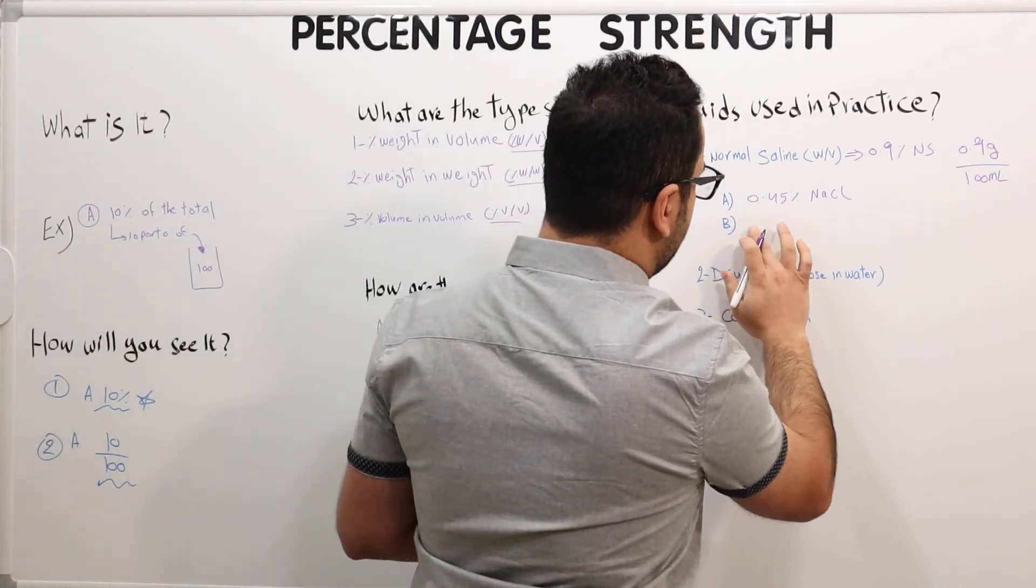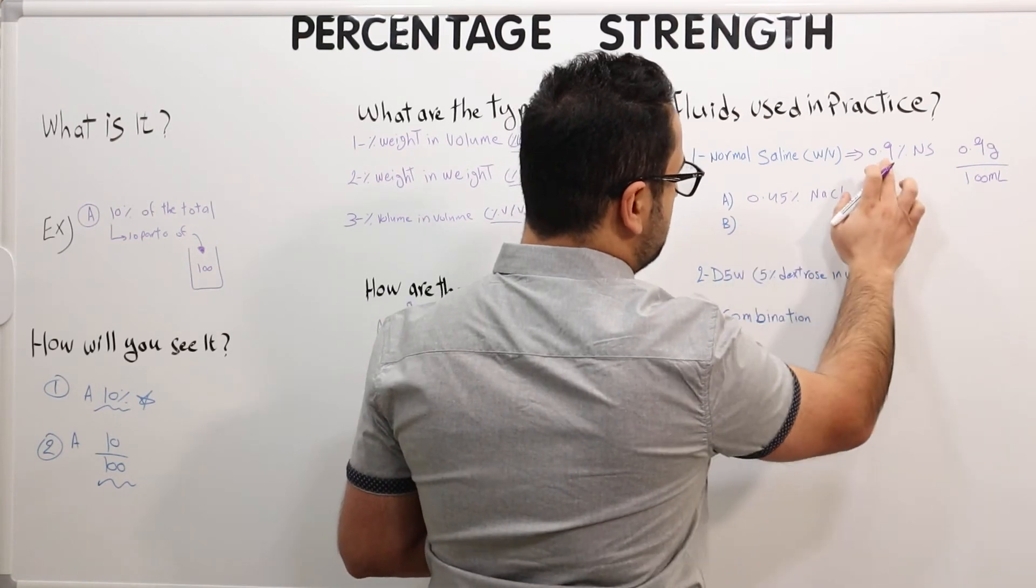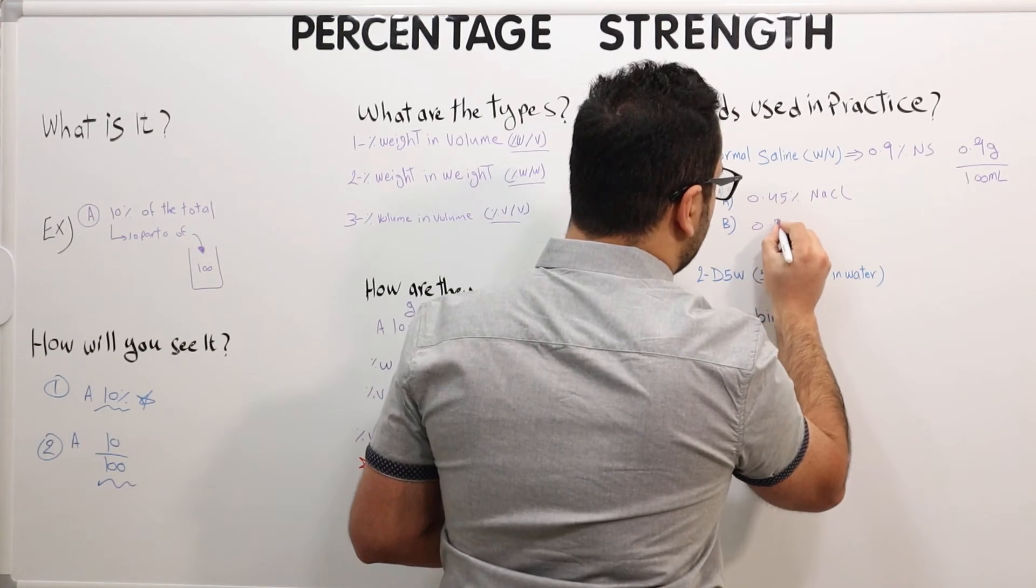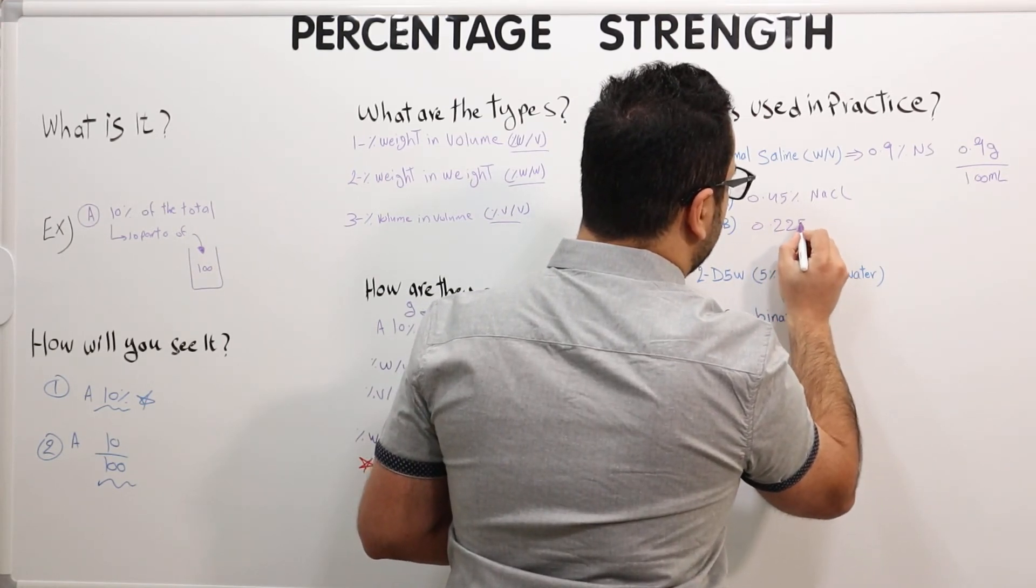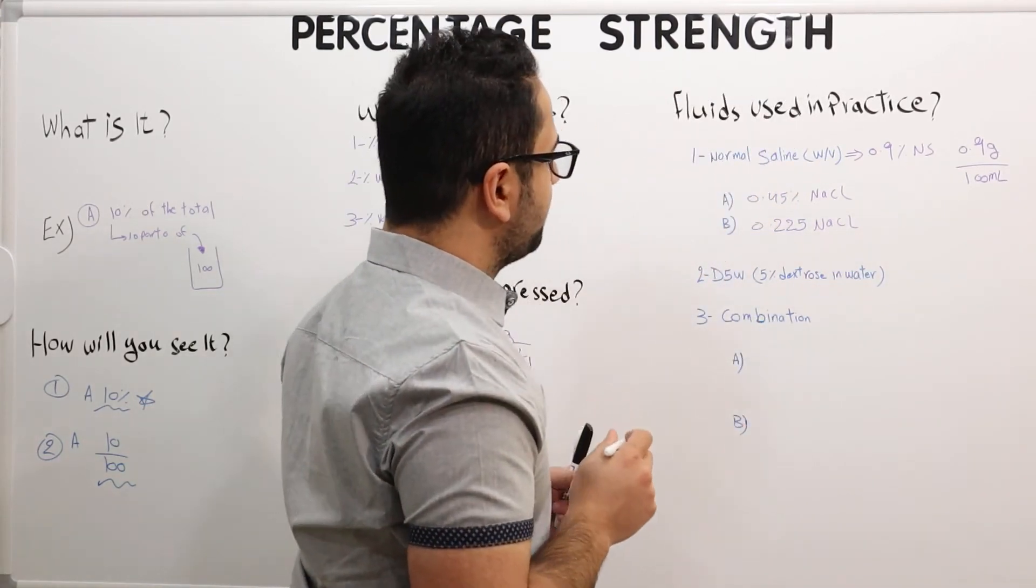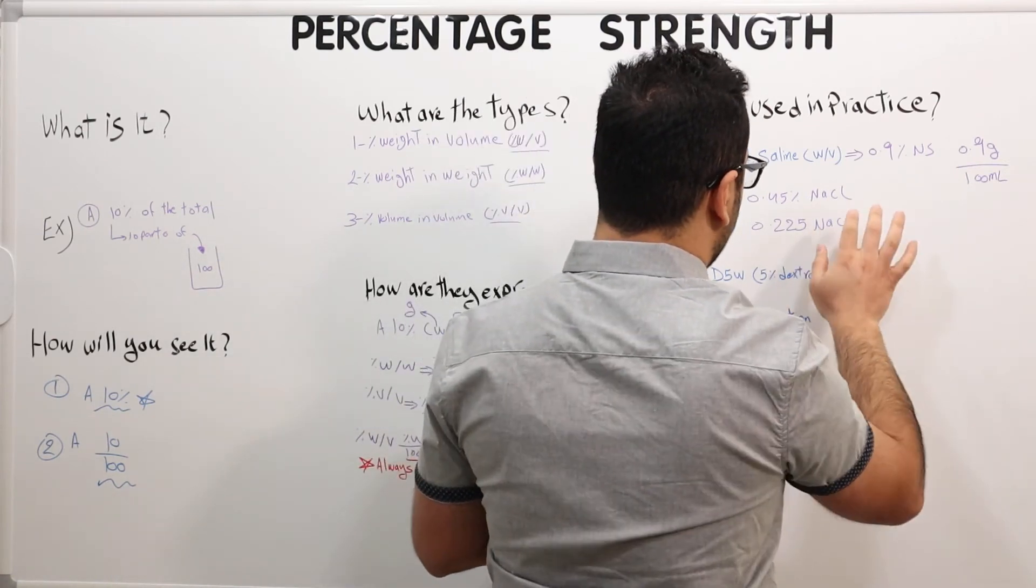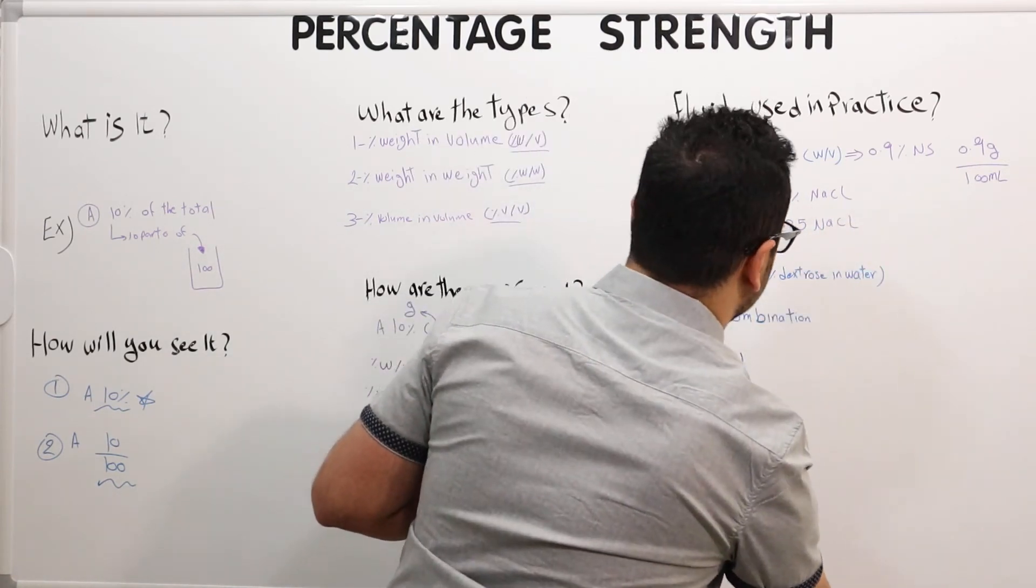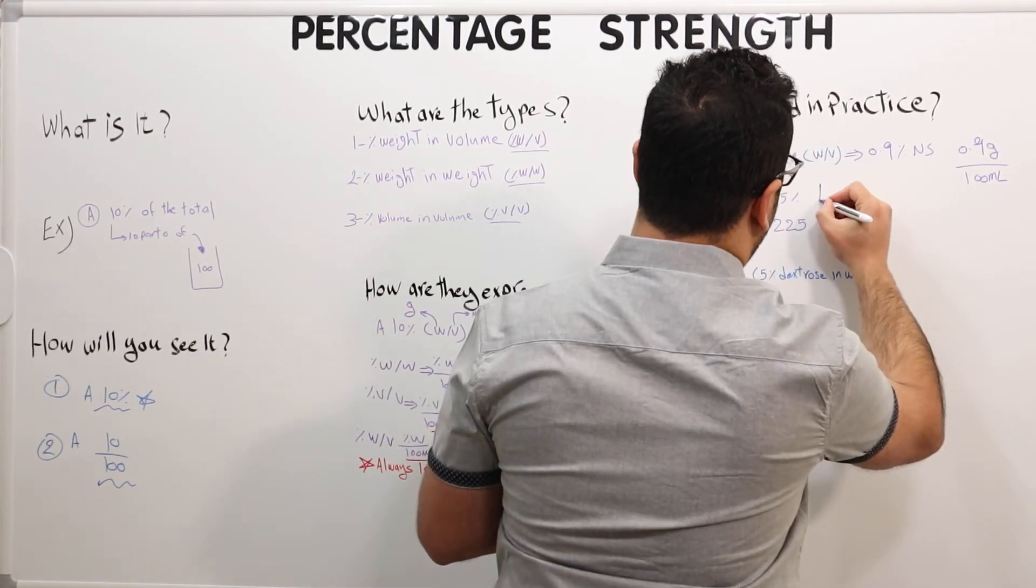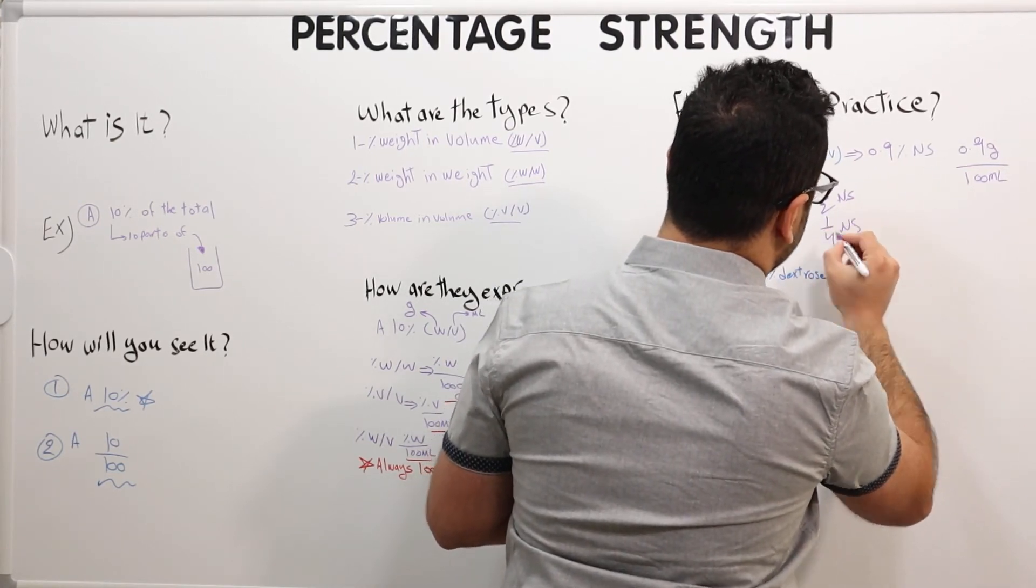There are two types for normal saline: half saline and quarter saline. Half saline is dividing 0.9 by 2, which is 0.45% NaCl sodium chloride. The other type is quarter, dividing by 4, which is 0.225% sodium chloride. This is half normal saline and this would be quarter normal saline.